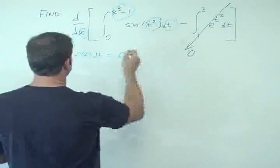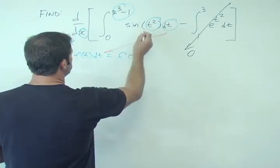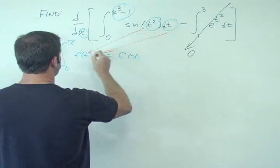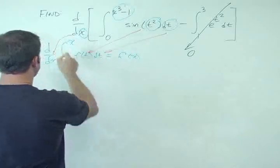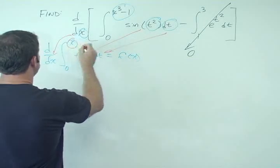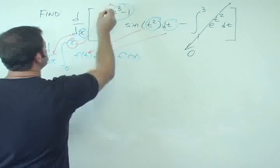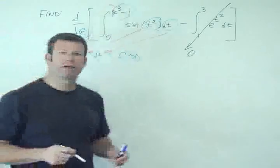The dt is pretty simple. The sin(t²) and f(t), pretty simple. The d/dx, pretty simple. But then we have this x, but here we have x³ - 1. So what are we going to do?